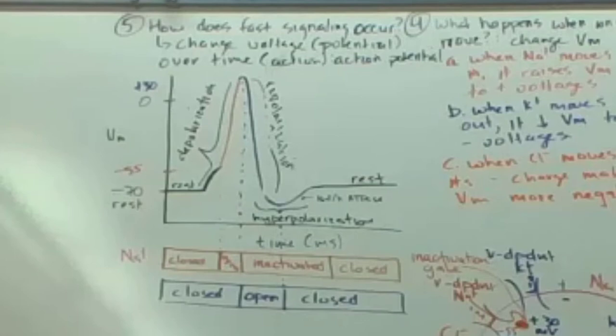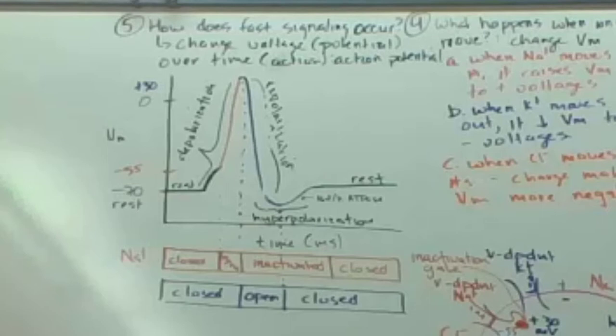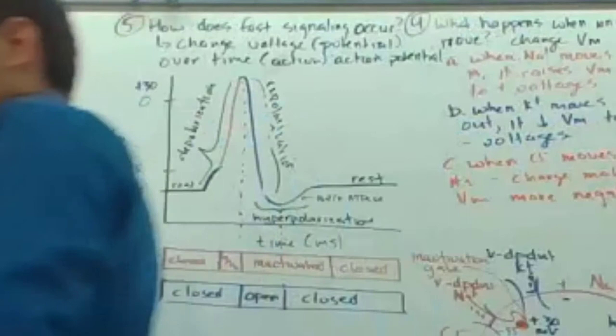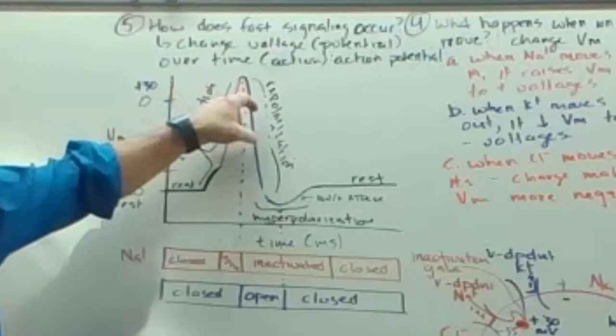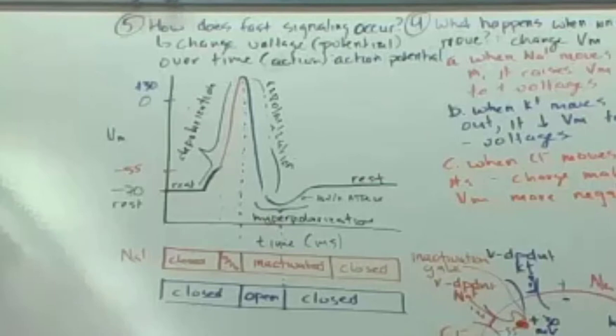You have to get the shape of the action potential correctly — there are specific inflection points. You must know resting, depolarization, repolarization, and rest, as well as closed-open-inactivated for sodium and closed-open-closed for potassium. There's one other thing you need: the refractory period. It's important in the heart because it prevents cardiac arrest.